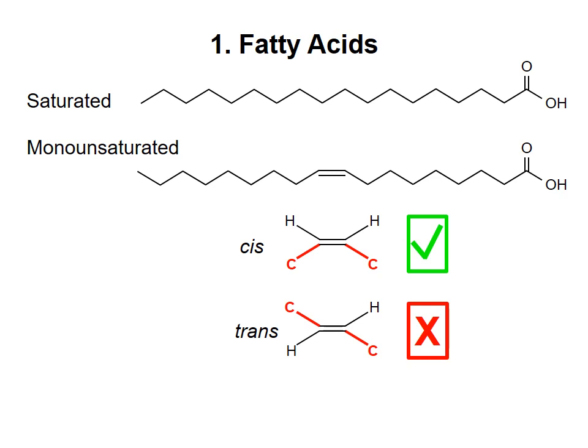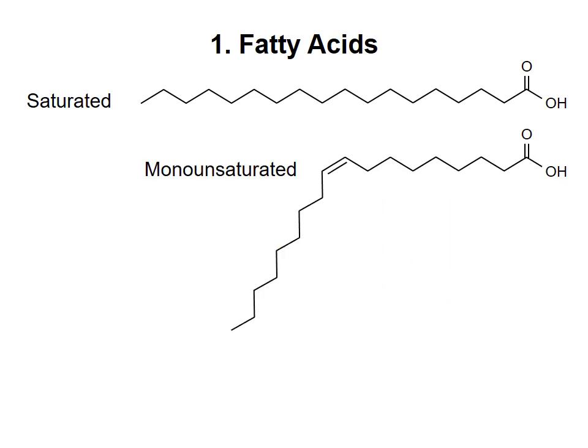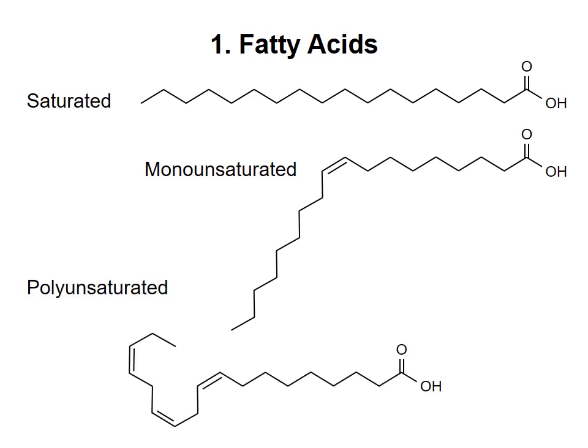Because there is no rotation around double bonds, a cis double bond forms a bend or a kink in the chain. Fatty acids with two or more double bonds are called polyunsaturated. Additional double bonds are typically added at every third carbon, as shown.